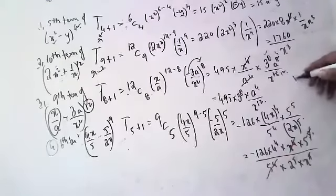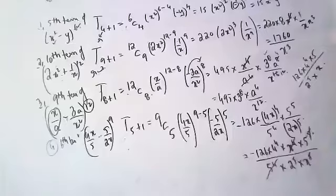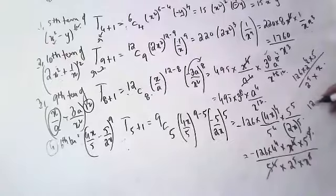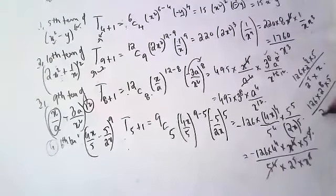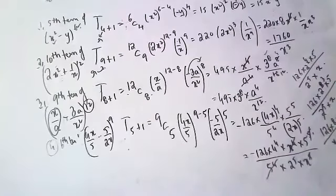Final answer: -126 · 4⁴ · 5 / (2⁵ · x). Writing 4⁴ as (2²)⁴ = 2⁸, so we get -126 · 2⁸ · 5 / (2⁵ · x) = -126 · 2³ · 5 / x = -126 · 8 · 5 / x = -126 · 40 / x.